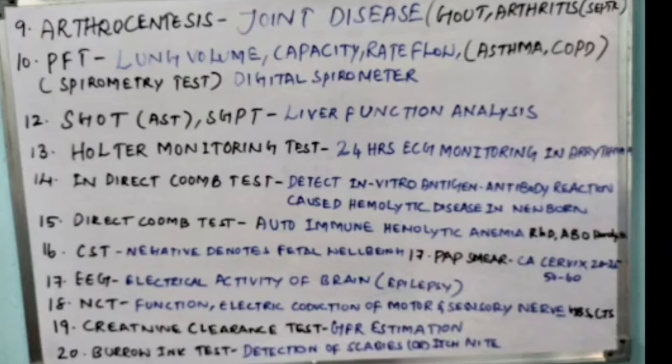Ninth point is Arthrocentesis, done to find out joint disease — specially gout, arthritis, and septic arthritis.